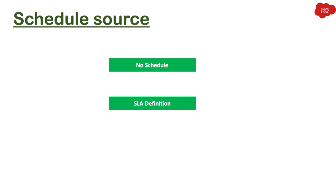When you have selected eight hours of duration with a 9-to-6 schedule, if your ticket comes in after 6 p.m., the SLA will not be calculated — it will be in a paused status. When you come back at 9 a.m. on Monday, the SLA will automatically be attached to the task and start running, because you have mentioned a schedule for that SLA definition.